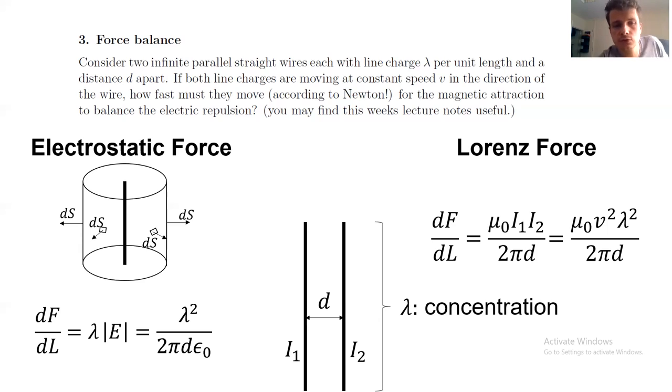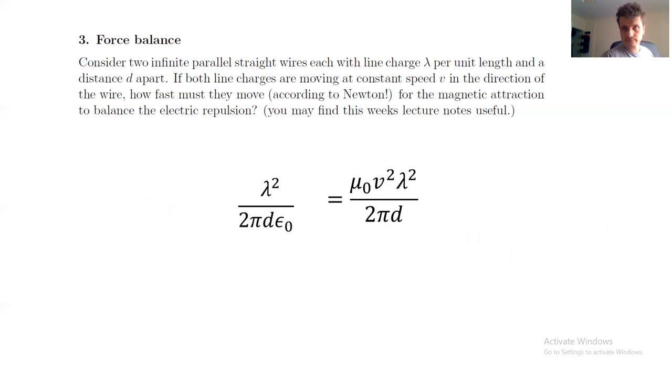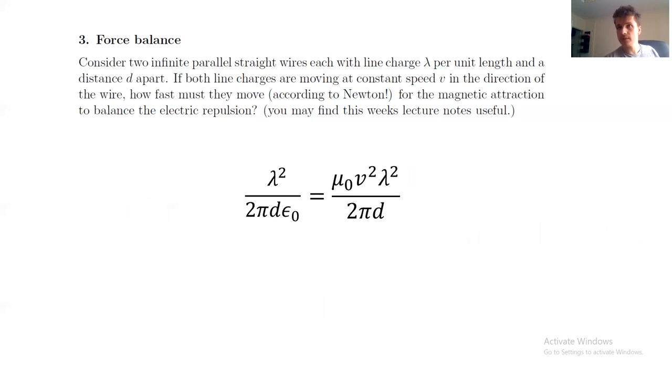Now, here's the crucial moment. The electrostatic force and the Lorentz force should be equal to each other. So we need to make them equal, and we do so to realize a couple of things. First, that the final results actually do not depend on d and lambda, which were quantities that were provided by the exercise.